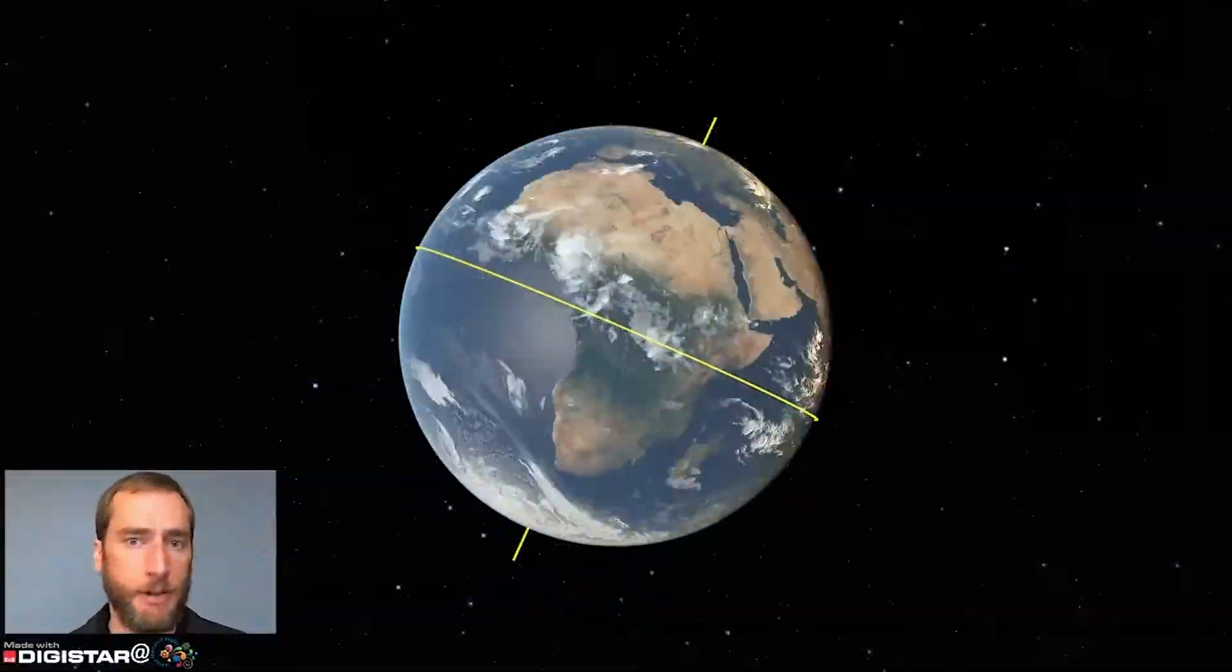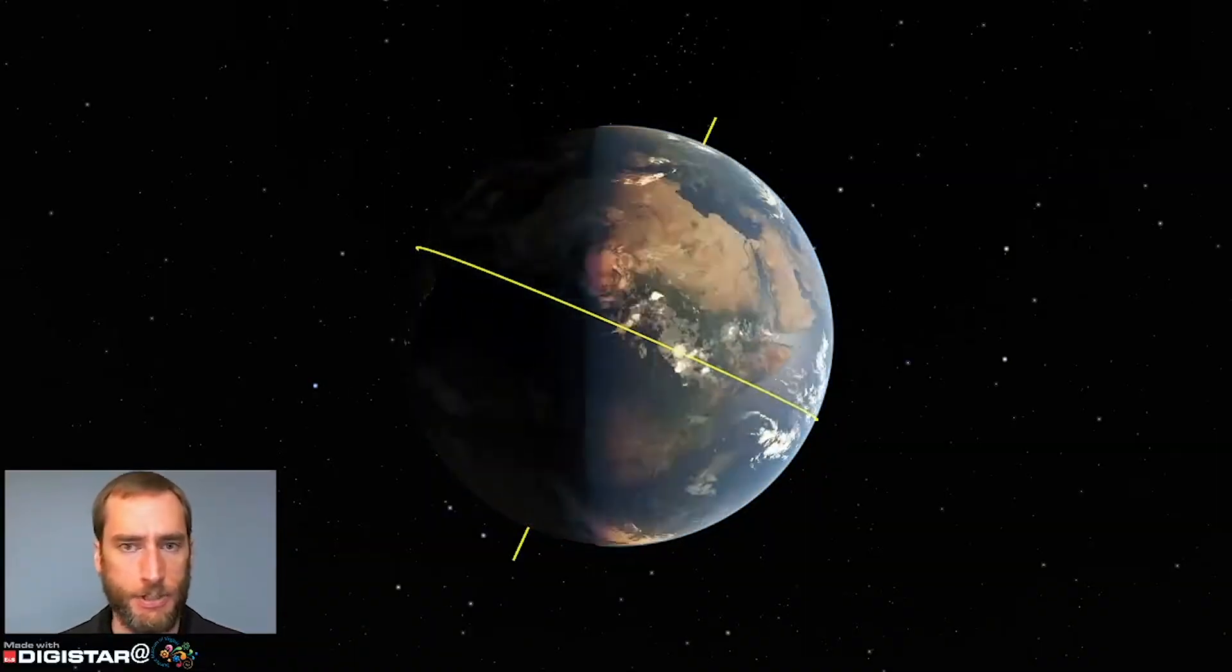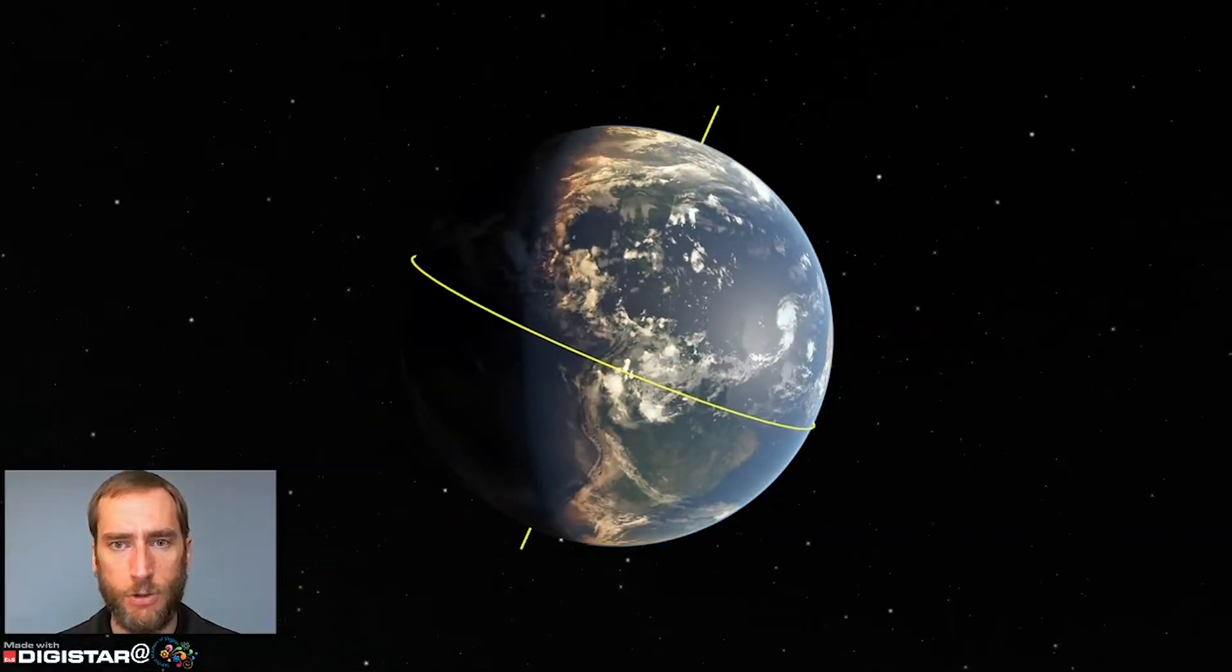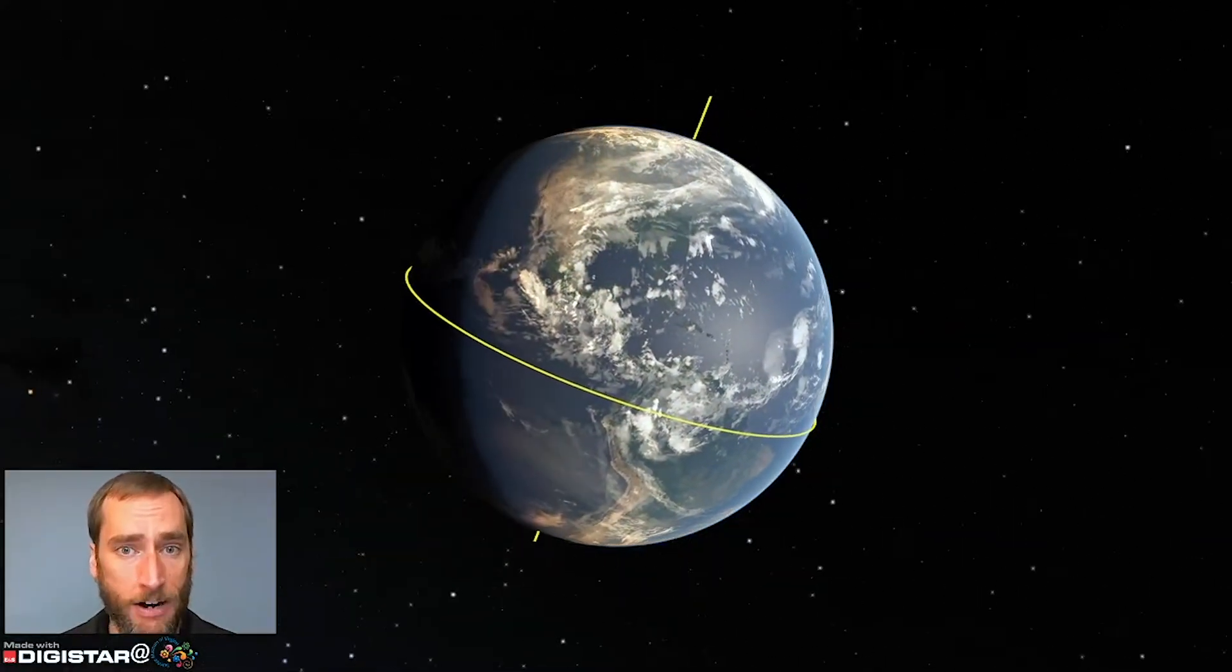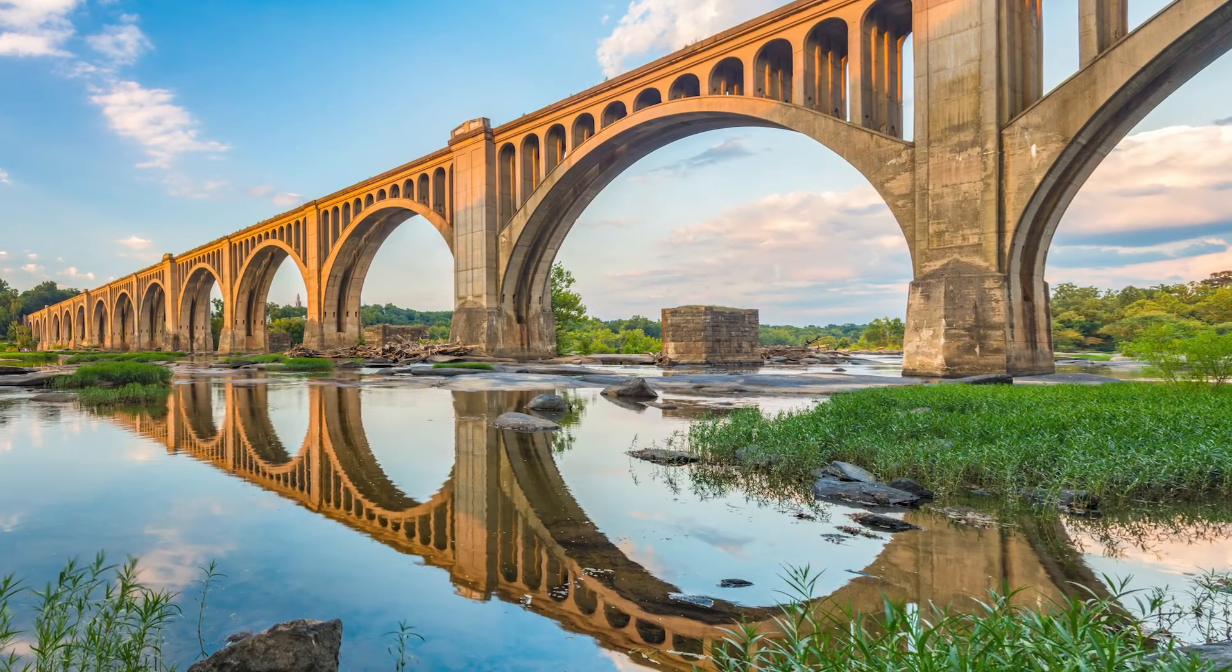If you wait six months, the Earth completes half of its orbit around the sun. We're on the opposite side of the solar system, and all of the angles are reversed. The north pole now tilts towards the sun. The sun rises higher in our skies, and here in Richmond, Virginia, we experience long summer days.